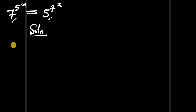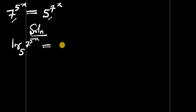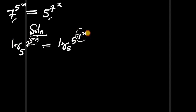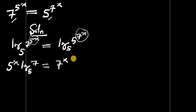We can start by taking the log to base 5 of both sides of this equation. We're going to have log in base 5 of 7 to the power of 5 to the power of x, and this is equal to log in base 5 of 5 to the power of 7 to the power of x. So 5 to the power of x will come in front of this log, and 7 to the power of x will come in front of this log, giving us: 5^x · log_5(7) = 7^x · log_5(5).